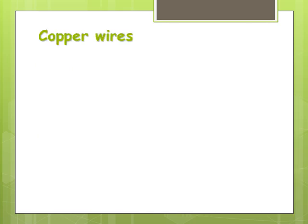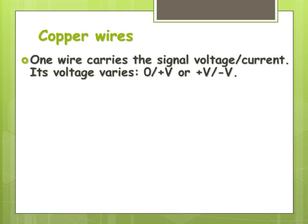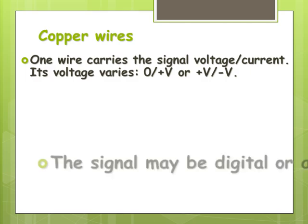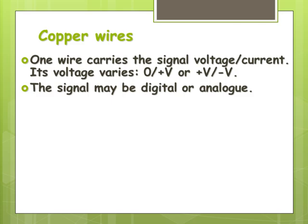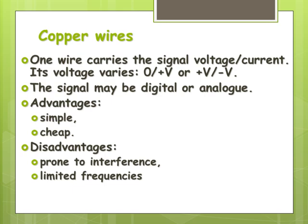This is a little bit of background and not going to be tested directly, but it's helpful when we look at telecommunications. Copper wires usually have voltage variation running through the wires, either from zero volts up to a positive voltage or oscillating around the zero volt mark. This can be a digital signal or analog. The advantages are it's simple and cheap, very easy to roll out. The disadvantages are that it is prone to interference and there are a very limited number of frequencies with which we can send signals.